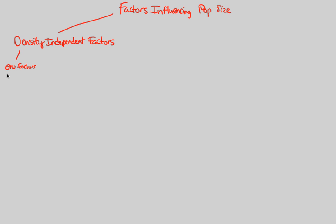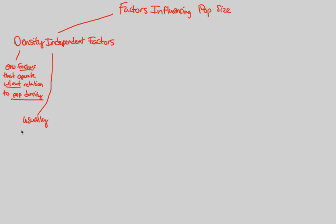Density-independent factors are environmental factors that operate without relation to population density. Remember, population density is the number of organisms per unit area or volume. These factors don't care about whether there is high, low, or no density. They are usually abiotic — non-living factors.